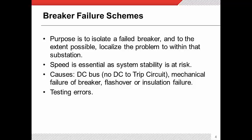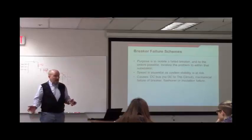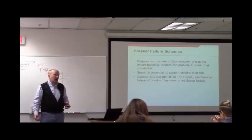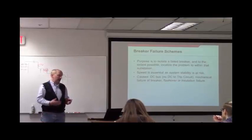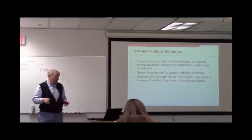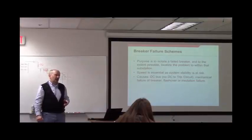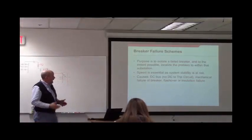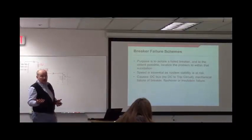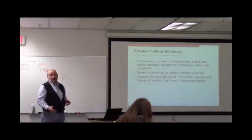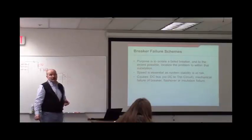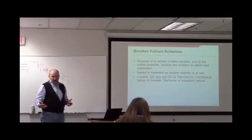A typical — probably the most common — cause of breaker failure is a problem with your DC supply, which is your control voltage for the circuit breaker. No DC supply, no trip. Human error is also very common: leaving a test switch open. Those little test switches — a human forgets to close one and you've now got an open circuit. You could also have mechanical failure, insulation breakdown within the circuit breaker, or a flashed-over breaker. Low gas with a block-operate policy is another cause.